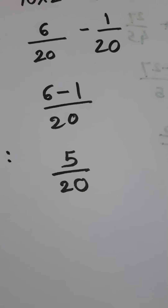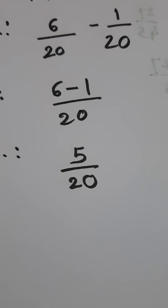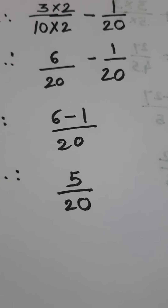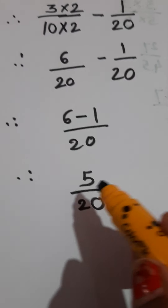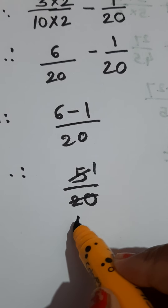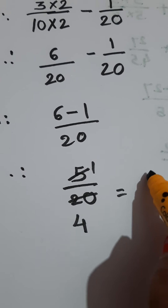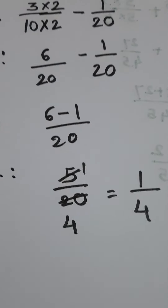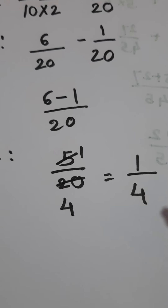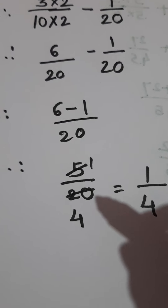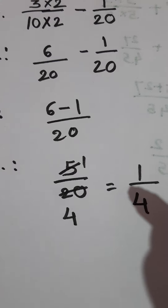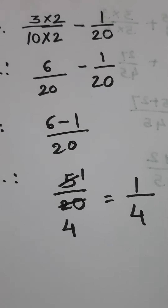So, 5 upon 20. Carefully observe the fraction: 5 and 20 are from the same table. 20 is present in 5's table, so here you can reduce the fraction also. 5 ones are 5, 5 fours are 20. So your final answer is 1 upon 4. If you want to reduce the fraction, you can do it this way: 5 ones are 5, 5 fours are 20, and the final answer is 1 upon 4.